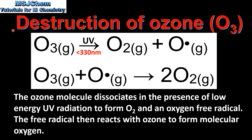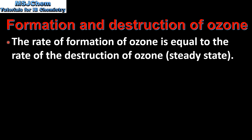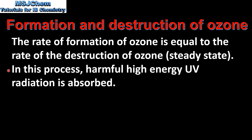Next we look at the destruction of ozone. The ozone molecule dissociates in the presence of low energy UV radiation with a wavelength of less than 330 nanometers to form molecular oxygen and an oxygen free radical. In the next step, the oxygen free radical reacts with ozone to form molecular oxygen. The rate of formation of ozone is equal to the rate of destruction of ozone, which is known as a steady state. In this process, harmful high energy UV radiation is absorbed.